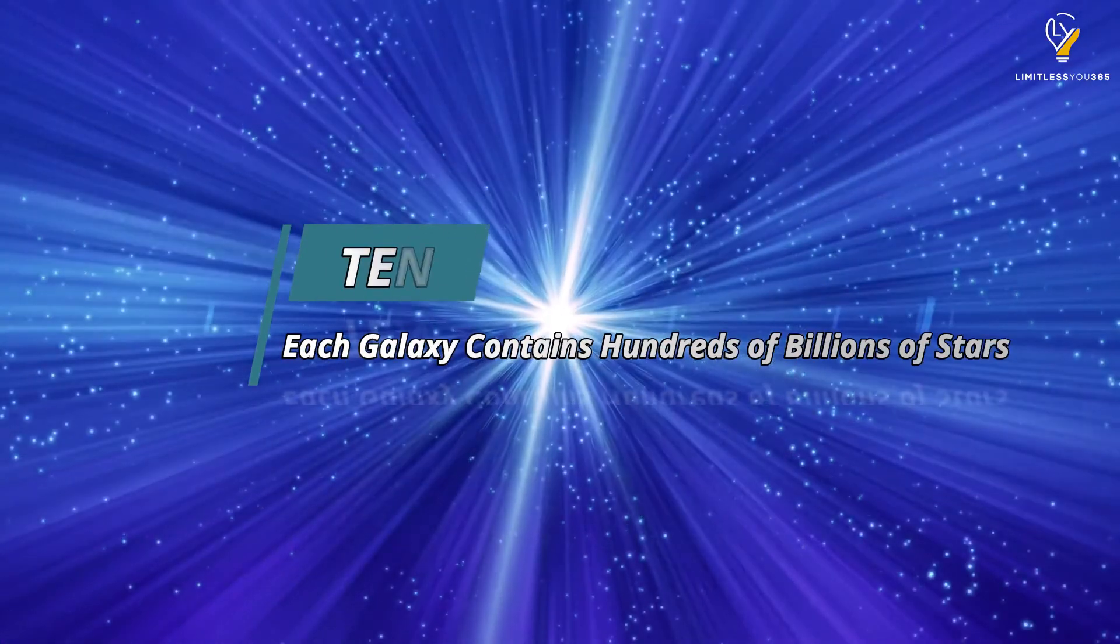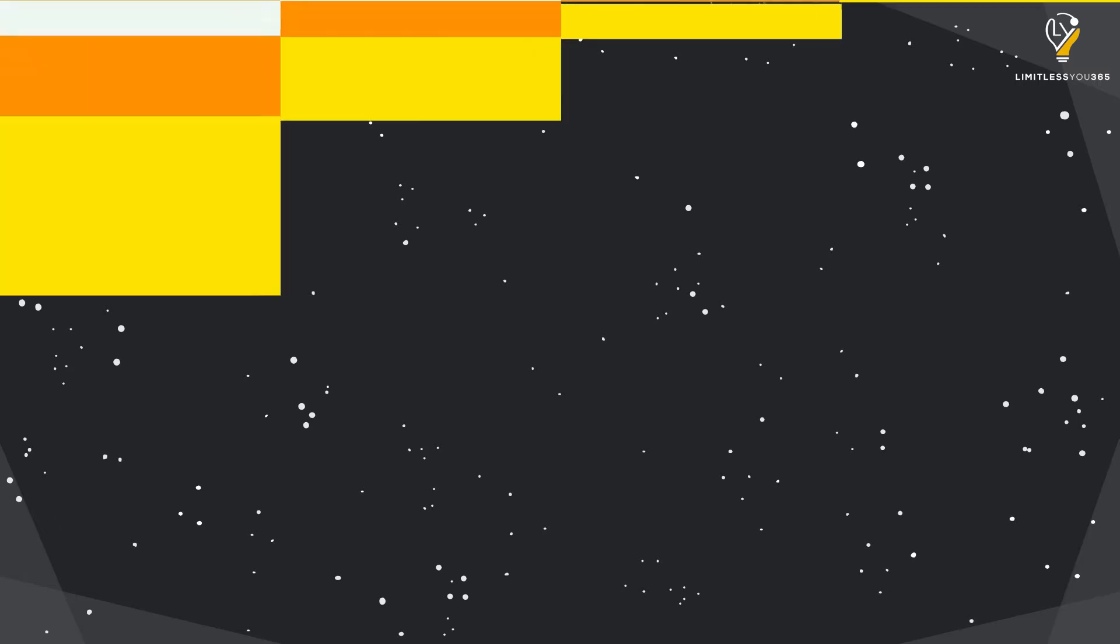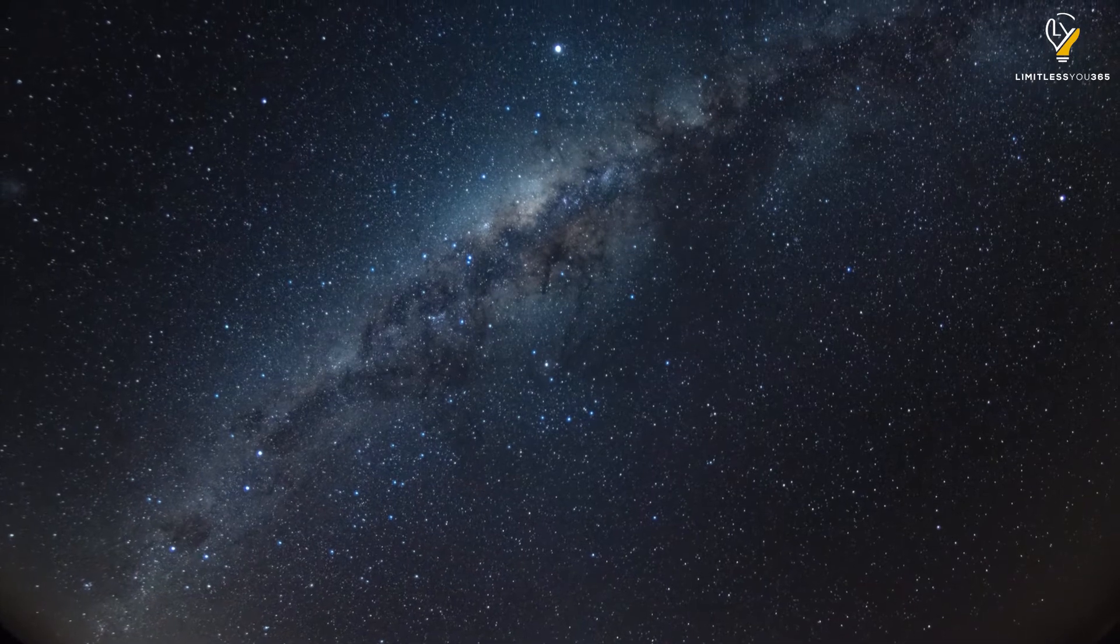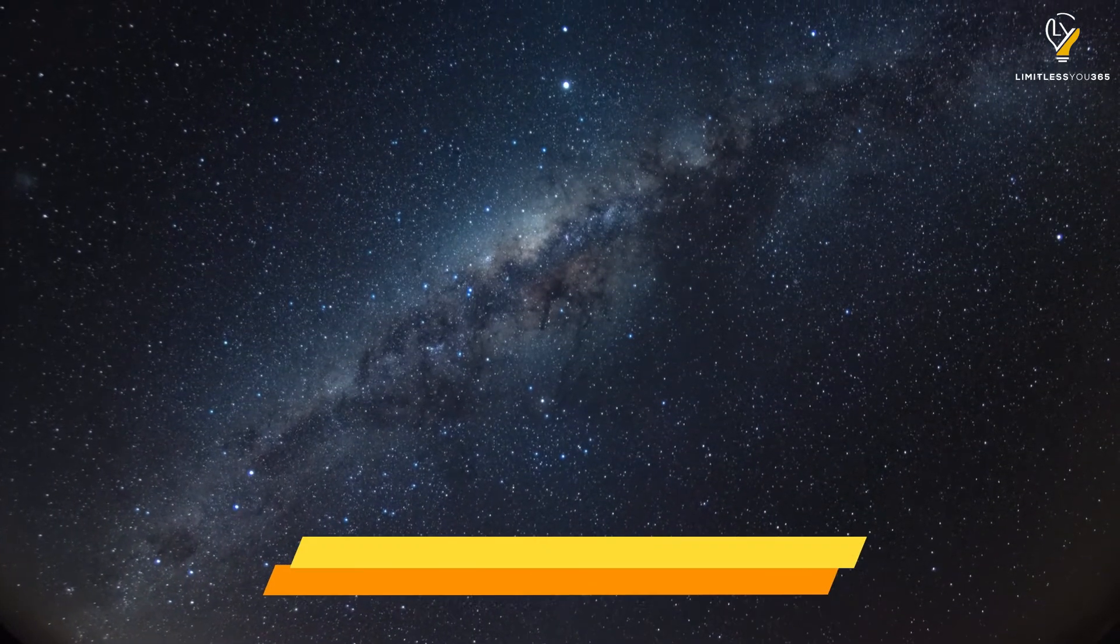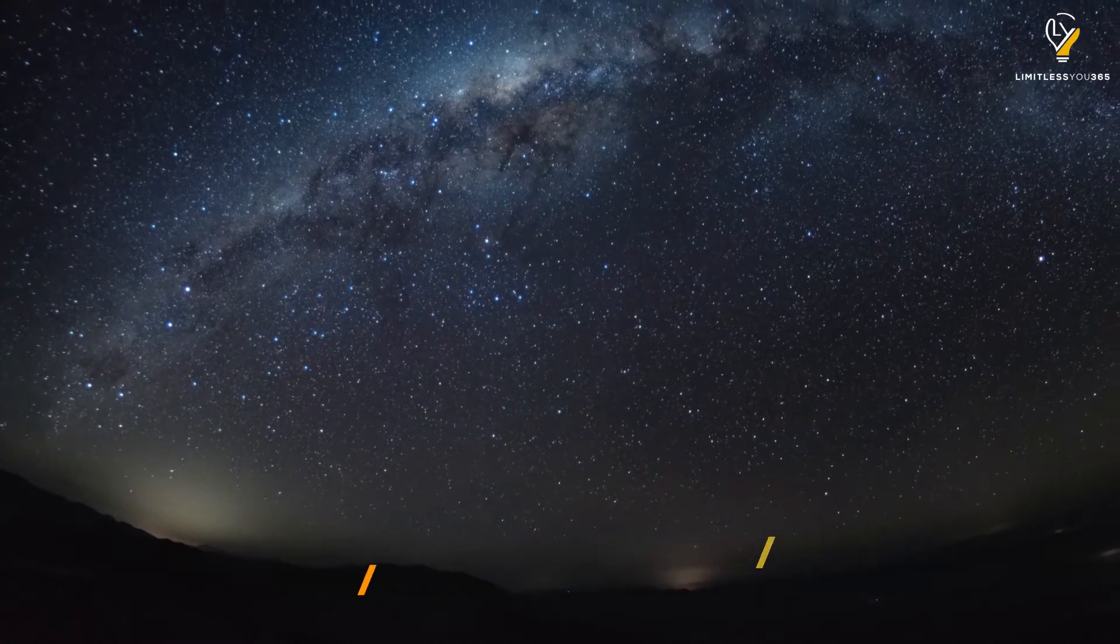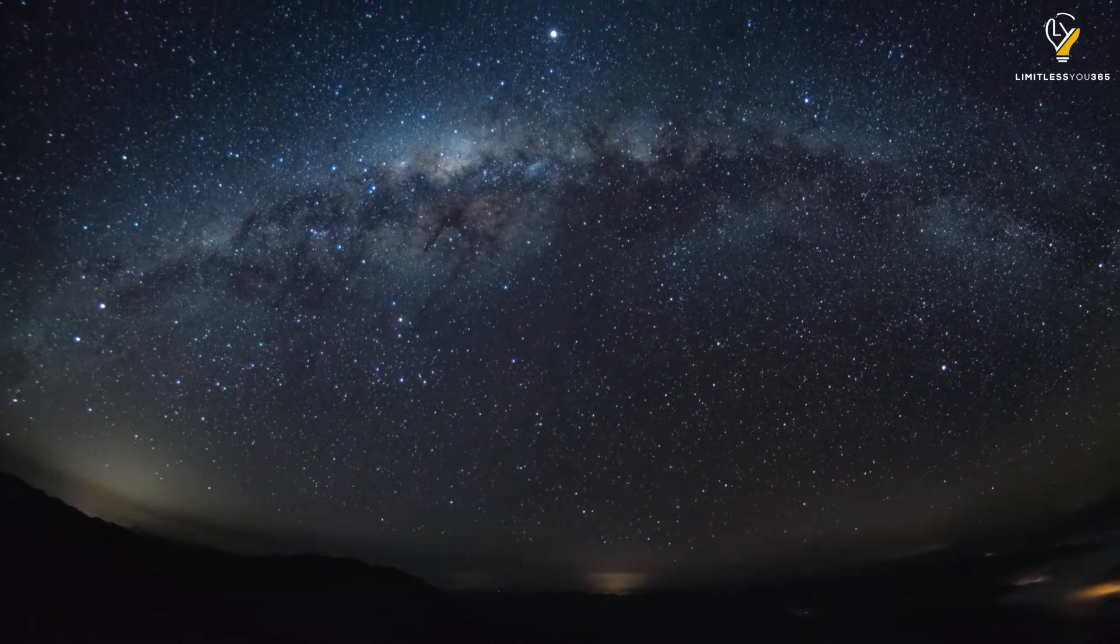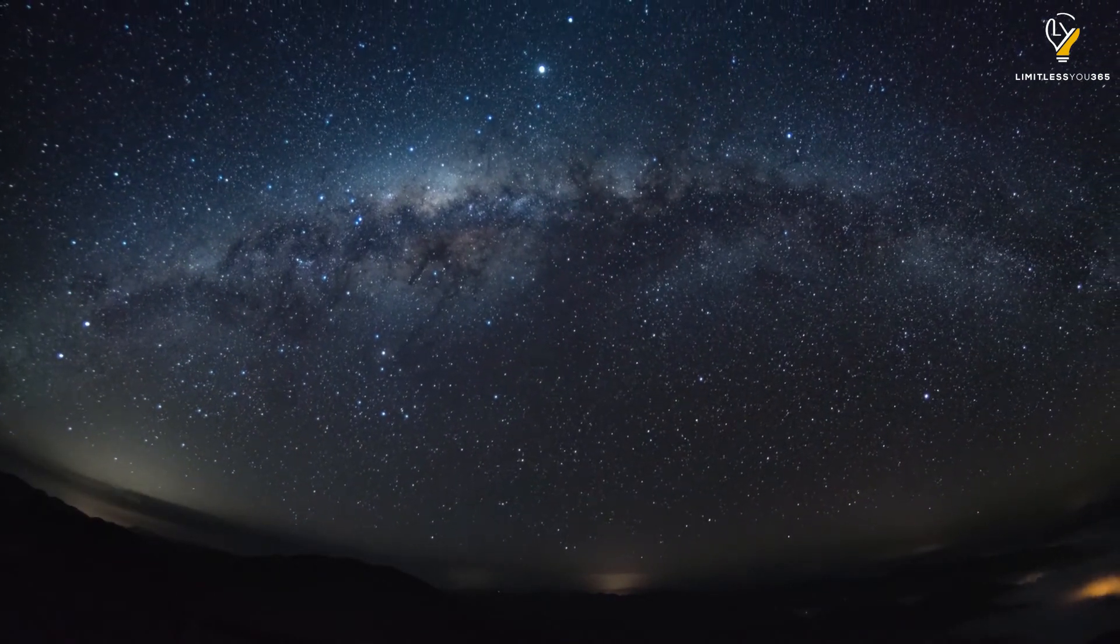Number ten: Each galaxy contains hundreds of billions of stars. Not only are there 100 billion galaxies, but each galaxy is made up of hundreds of billions of stars. That's a lot of stars. In fact, if you were to count one star per second, it would take you over 31 million years to count them all. So don't feel bad about not being able to see all the stars in the sky. It would take a lifetime and then some.